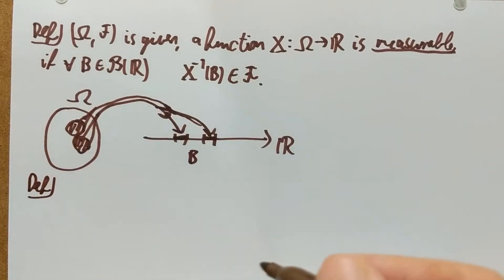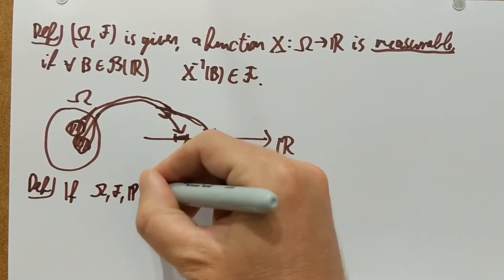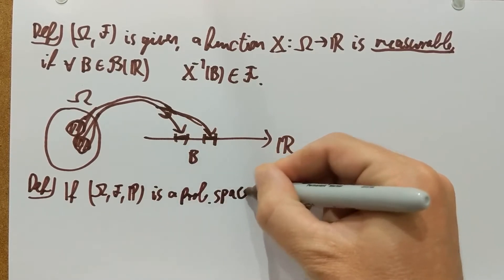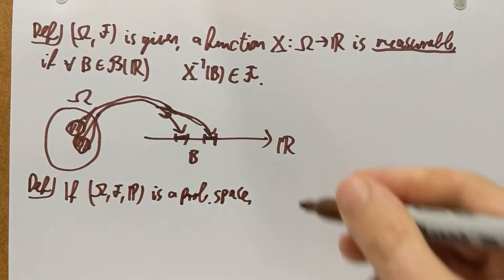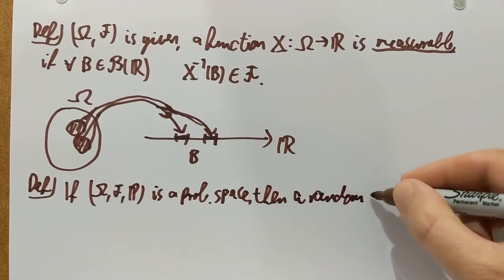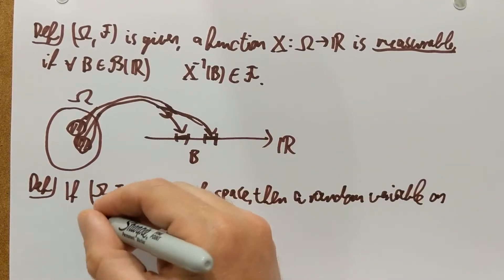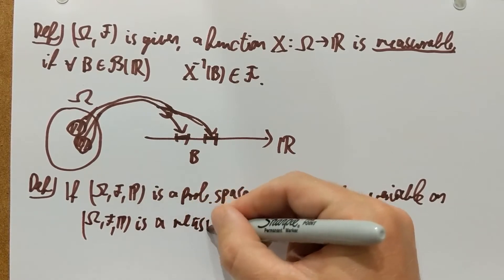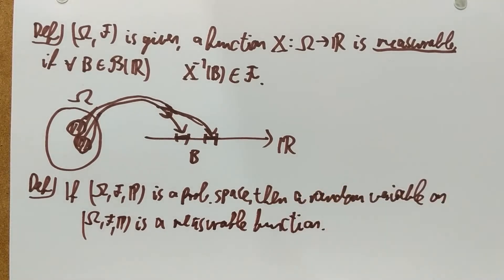Definition: if you have a probability space — so if (Ω, F, P) is a probability space — then we call a random variable simply a measurable function on it. A random variable on this probability space (Ω, F, P) is simply a measurable function. So random variables are nothing else but measurable functions.